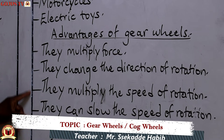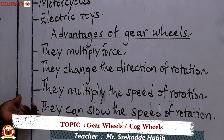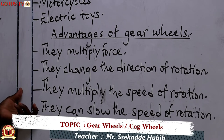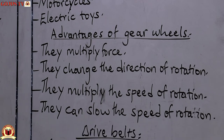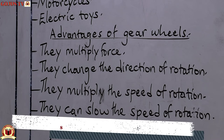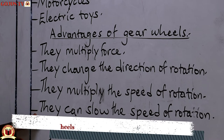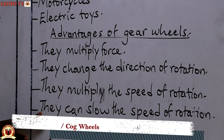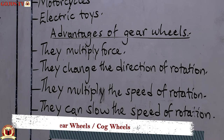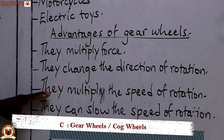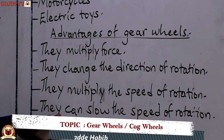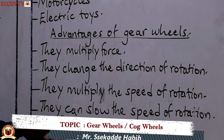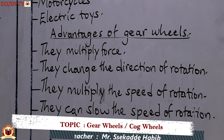These speed effects can be experienced when riding a bicycle — specifically the gear bikes. When you reach a steep slope you change the gear, which changes the speed of rotation. Gear wheels can both increase the speed of rotation and slow it down, especially on a slope.